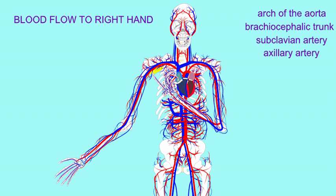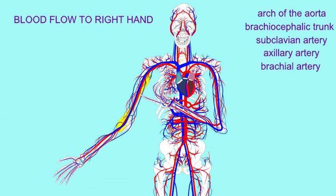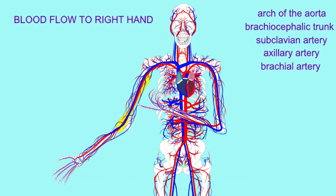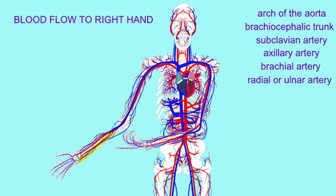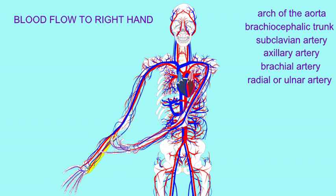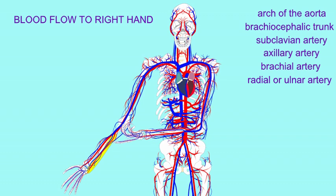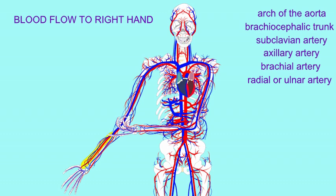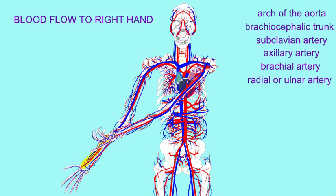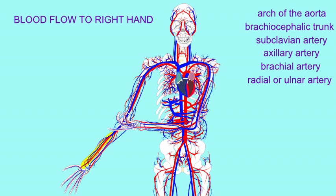When this artery leaves the axilla and enters the upper arm, I refer to it as the brachial artery. This brachial artery then enters the forearm where it divides and forms the ulnar artery, which goes to the medial side of the hand, and the radial artery, which goes to the lateral side of the hand. So if I was sending blood to the lateral side of the hand, I would go from the brachial artery to the radial artery.